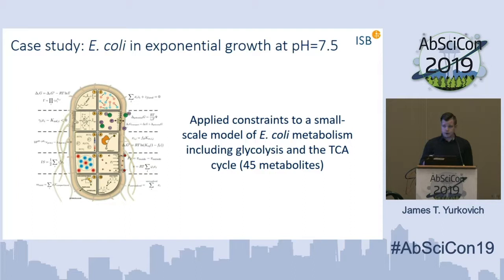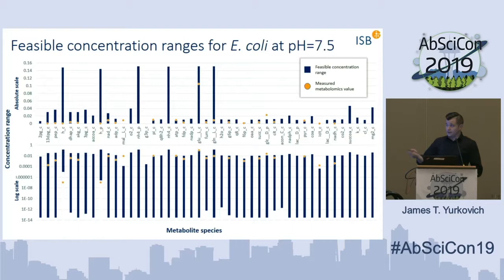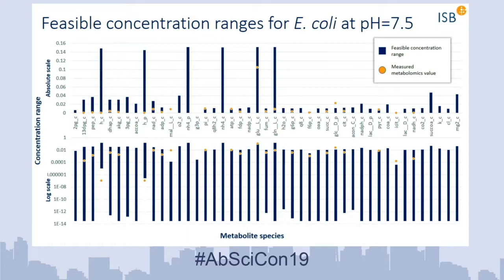We're currently applying this framework to different case studies. The first one I'll discuss is modeling E. coli in exponential growth at pH 7.5. We're scaling up to genome scale, but right now we've been tuning parameters on a smaller network containing glycolysis and the TCA cycle — about 45 metabolites total. The bars shown represent the minimum and maximum feasible concentrations according to our constraints, and the yellow points are measured data from Joshua Rabinowitz's lab, allowing us to see how well these mathematical constraints perform.